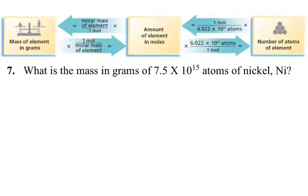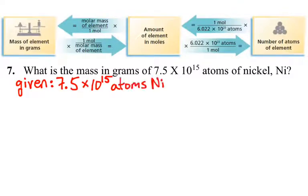So, in this problem, it's a two-step process to get to our final answer. We again start off the same way though. We say we are given something here. We're given 7.5 times 10 to the 15 atoms of nickel. So we find this up on our diagram up here from our textbook. We're given a number of atoms of our element.